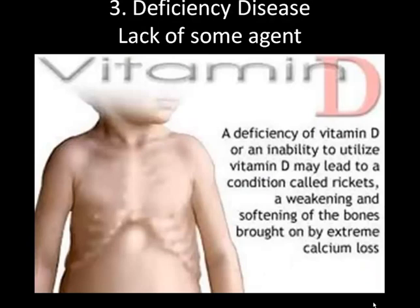We have deficiency diseases, which means the body lacks some type of agent. A good example is rickets. If you don't get vitamin D in your body, you cannot absorb calcium appropriately. It won't be absorbed effectively and will cause softening of the bones and all sorts of problems. That's why in our society we have fortified vitamin D in milk. There are other deficiencies such as iron deficiency, which can cause anemia.